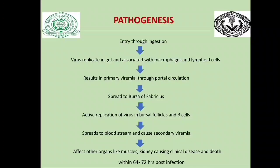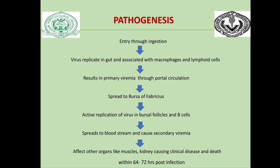In pathogenesis, the virus enters through ingestion, then replicates in the gut and associates with macrophages and lymphoid cells. It causes primary viremia through portal circulation, then travels to the bursa of Fabricius, which is the target organ. Active replication takes place in bursal follicles and B-lymphocytes. It then enters the bloodstream causing secondary viremia, affects other organs like muscles and kidney, and can cause death within 64 to 72 hours post-infection.